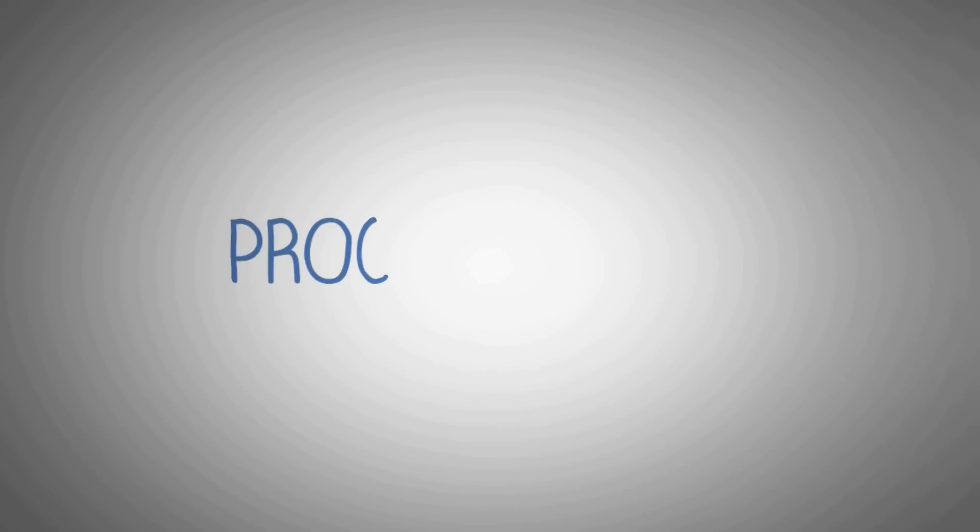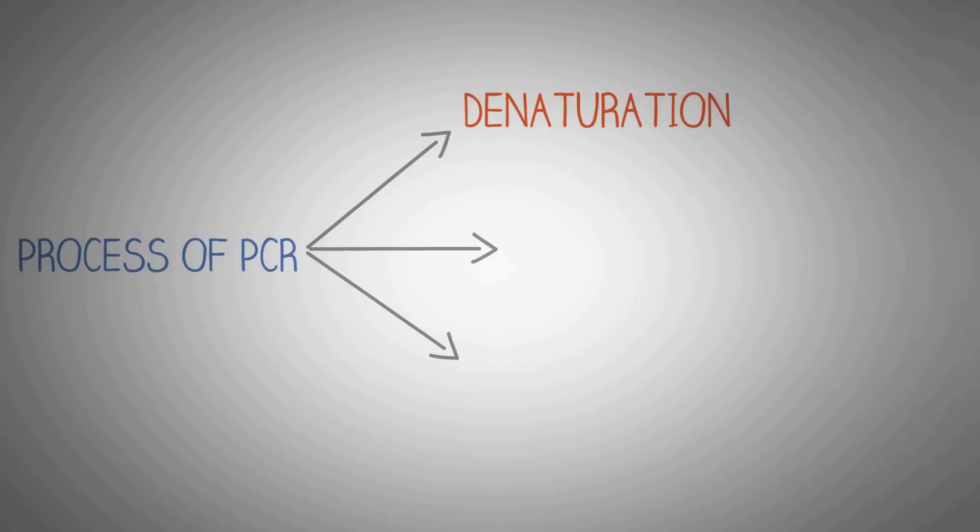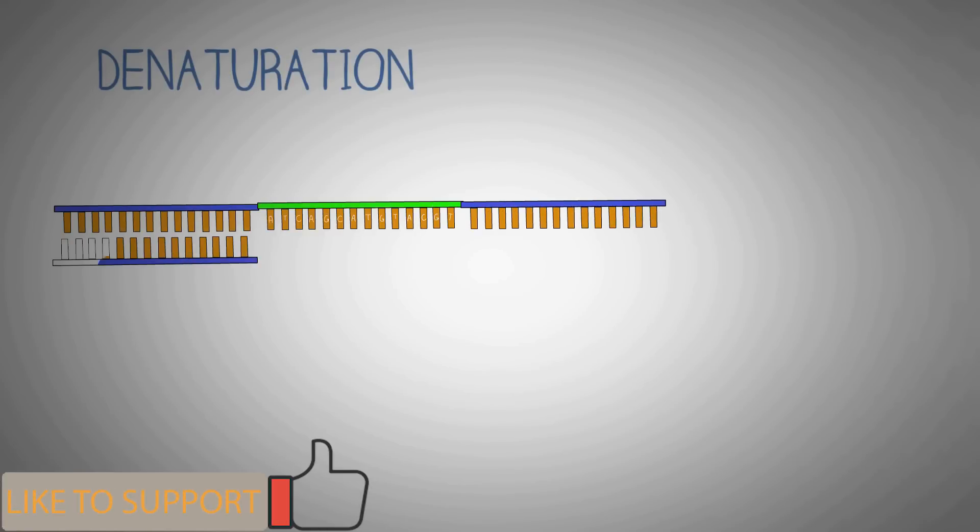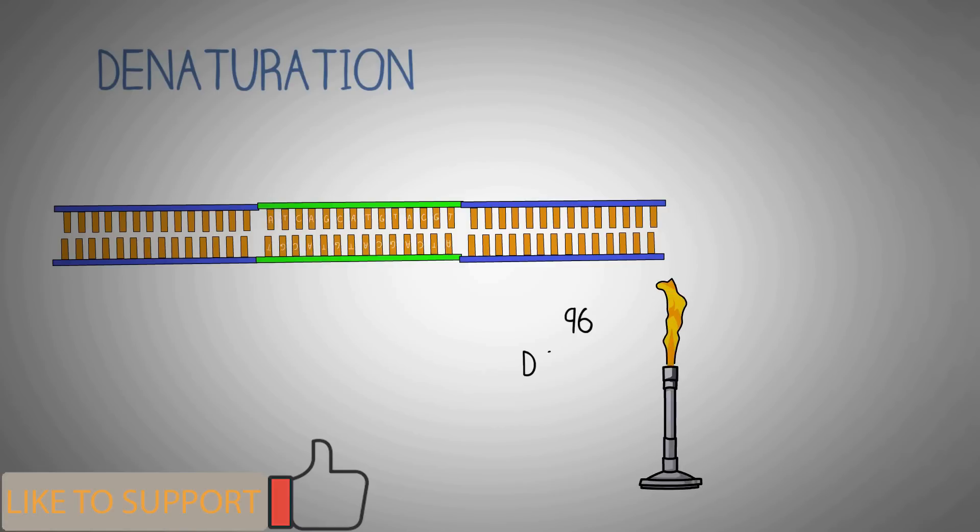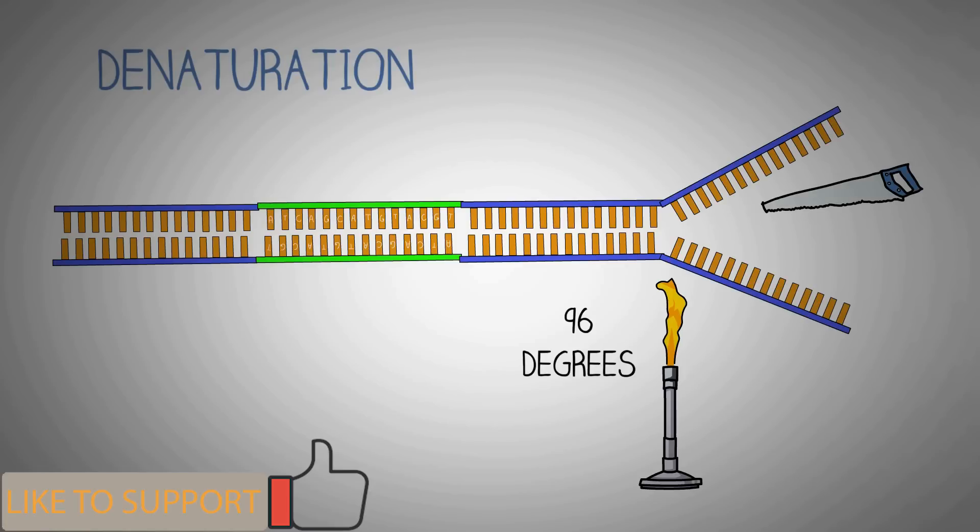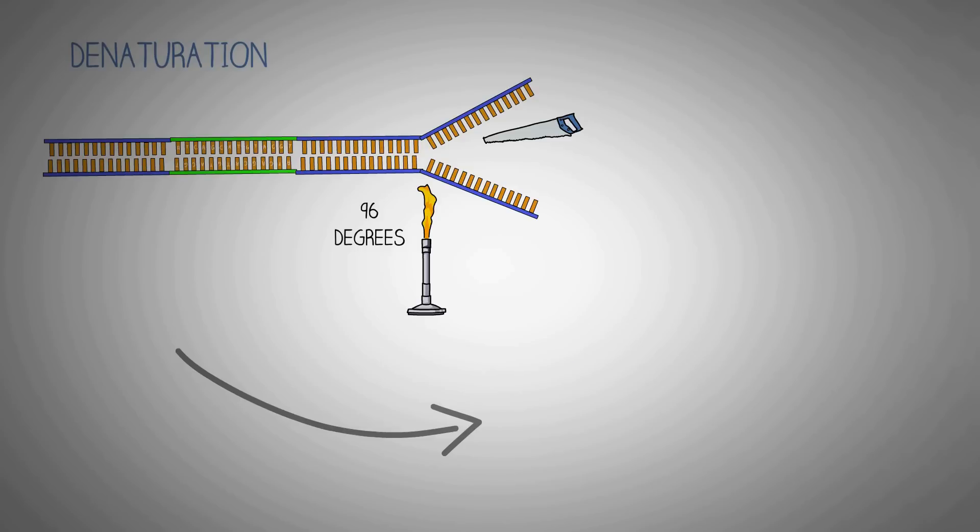Now we will discuss about the process of PCR. PCR involves three simple steps: denaturation, annealing, and extension. In the first step of polymerase chain reaction we raise the temperature of the machine to 96 degrees Celsius. This is done to denature or separate the two strands of DNA, so as a result of this step we get two separate strands of DNA.